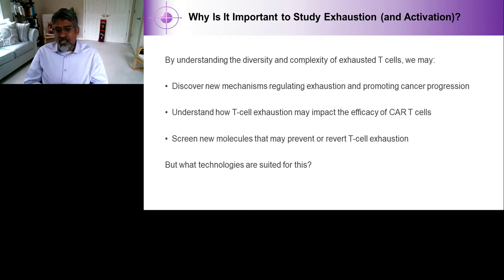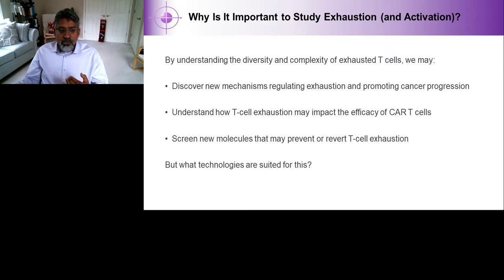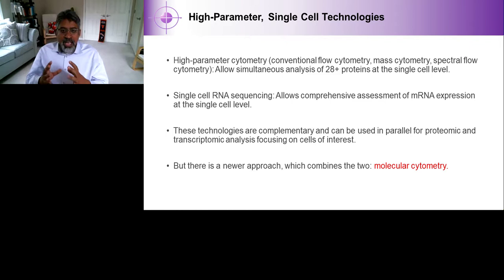So why is it important to study these processes? By understanding the diversity and complexity of exhausted T-cells, we might discover new mechanisms that regulate exhaustion and promote cancer progression. We can understand how T-cell exhaustion may impact adoptive immunotherapy when CAR T-cells are used, and we can develop ways to screen for new molecules that may prevent or revert T-cell exhaustion. The question then is what technologies are suitable to do this kind of work.